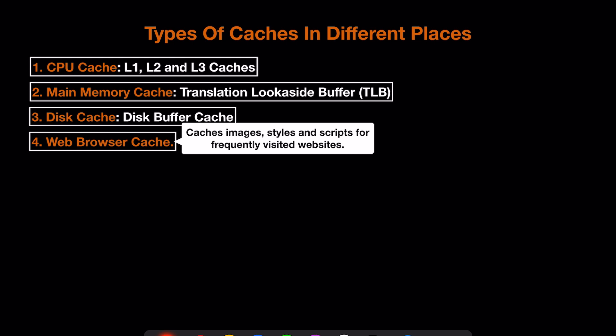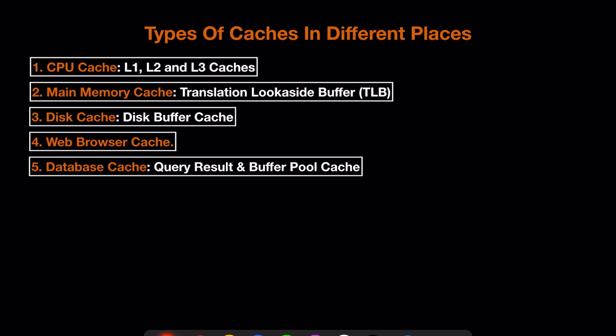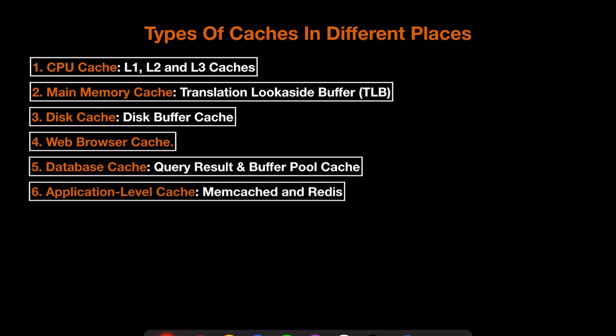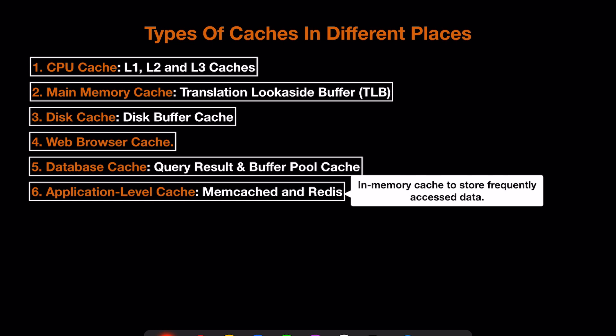We also have web browser cache, where we cache images, styles, and other scripts for frequently visited websites. Number five is database cache — there are two types: query result cache and buffer pool cache. Query result cache caches results for frequently accessed queries. Then we have application-level cache, which is an in-memory cache for frequently accessed data and is the main thing we talk about in system design interviews.